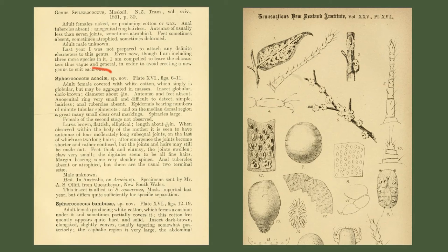Now you may wonder about that word acacia, as if this material is only found on acacias rather than kunzias. When this insect was first described by William Miles Maskell in 1893, he named it acacia after the plant material that was presented to him — material that had been misidentified by someone else — and that word has stuck till today. Kind of a historical anomaly, I guess.